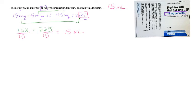Now you can also set this up as a fractional ratio and proportion. In order to do that, you still want to start with your known, which is that 15 milligrams is in 5 milliliters of the medication. And then it's going to be equal to 45 milligrams over x milliliters.